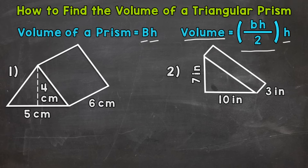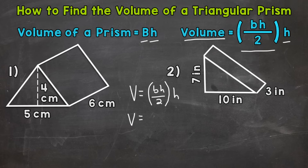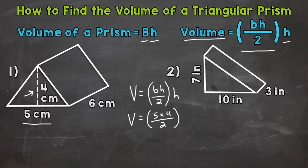Let's find the volume of number 1, and we'll start by writing out our formula. Volume equals base times height divided by 2 — the formula for the area of a triangle — times the height of the prism. Let's plug in. The base of the triangle is 5 centimeters, so we plug in 5 times the height of the triangle, which is 4 centimeters. We divide by 2 and multiply by the height of the prism, which is 6 centimeters.